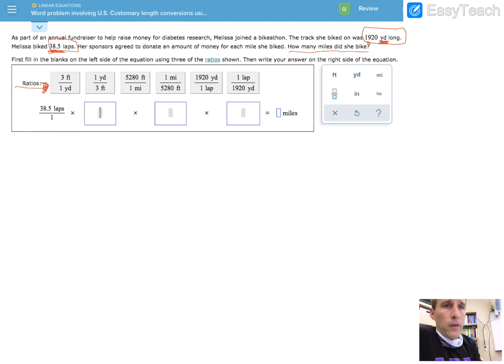Well, we know that the best way to do this is looking at the units. You see we have laps up here. So I know I need to get rid of laps. So to get rid of laps, I need to put laps in the denominator.